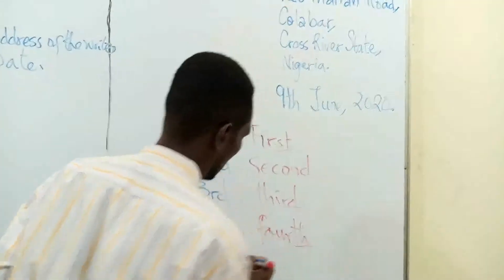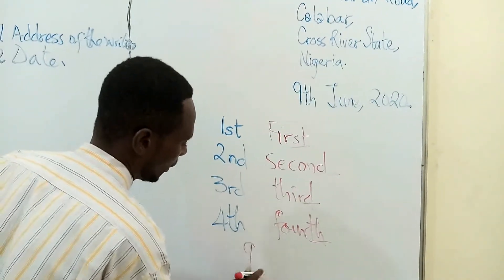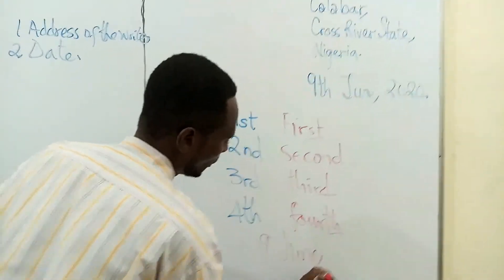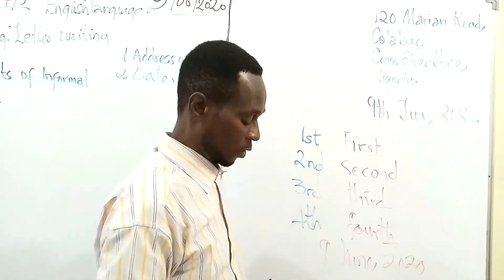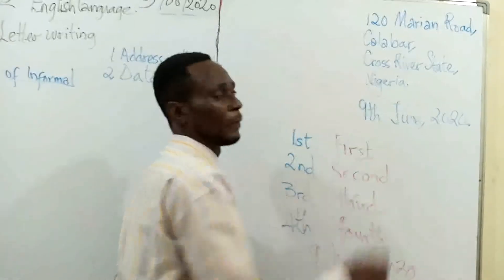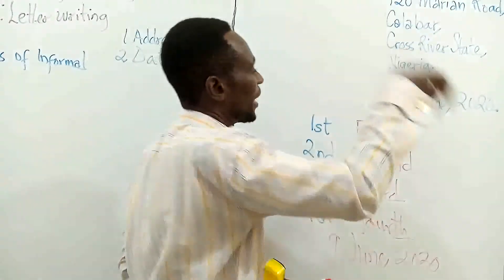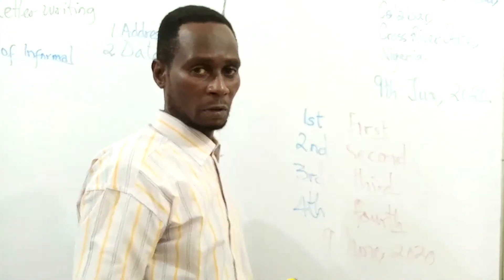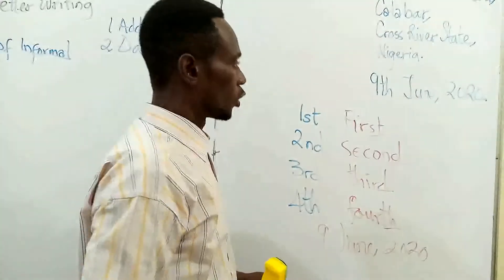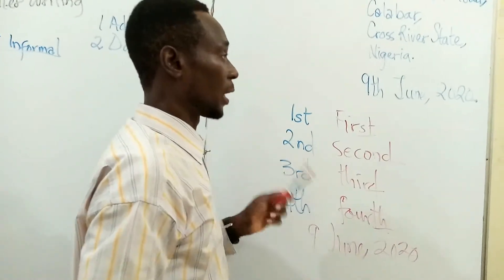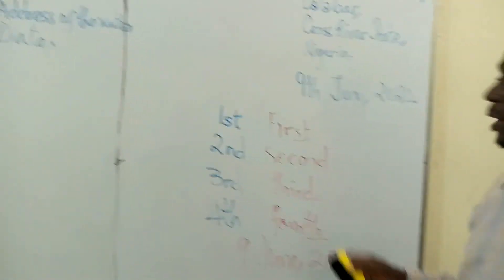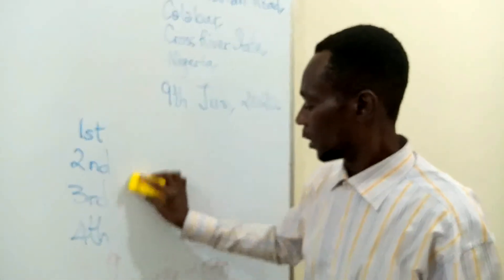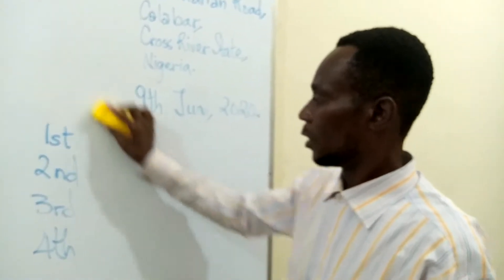If you don't add this TH, ST, ND, or RD, what you are saying is that you are just counting — 1, 2, 3, 4, 5, 6, 7, 8, 9. Until you put the suffix, the person will know it is on the ninth day of the month of June. This place is very, very important — the examiner will look out for this. Remember to write the month in full.